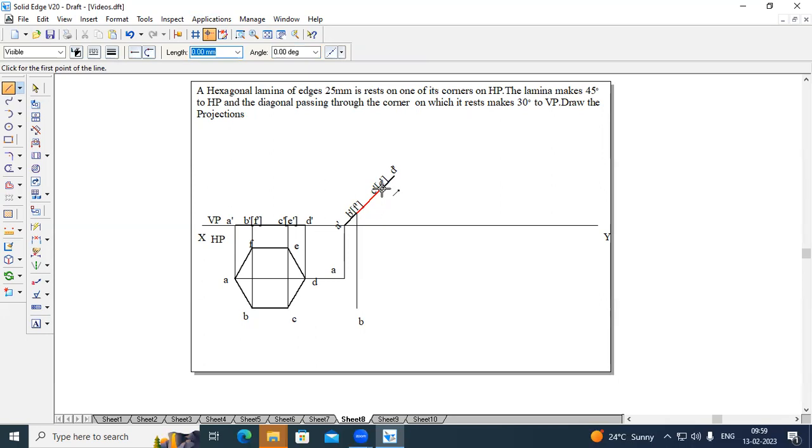And from C dash and E dash, this will be point C and E. This is point C. This will be point E. And from D, from D dash, this will be point D.